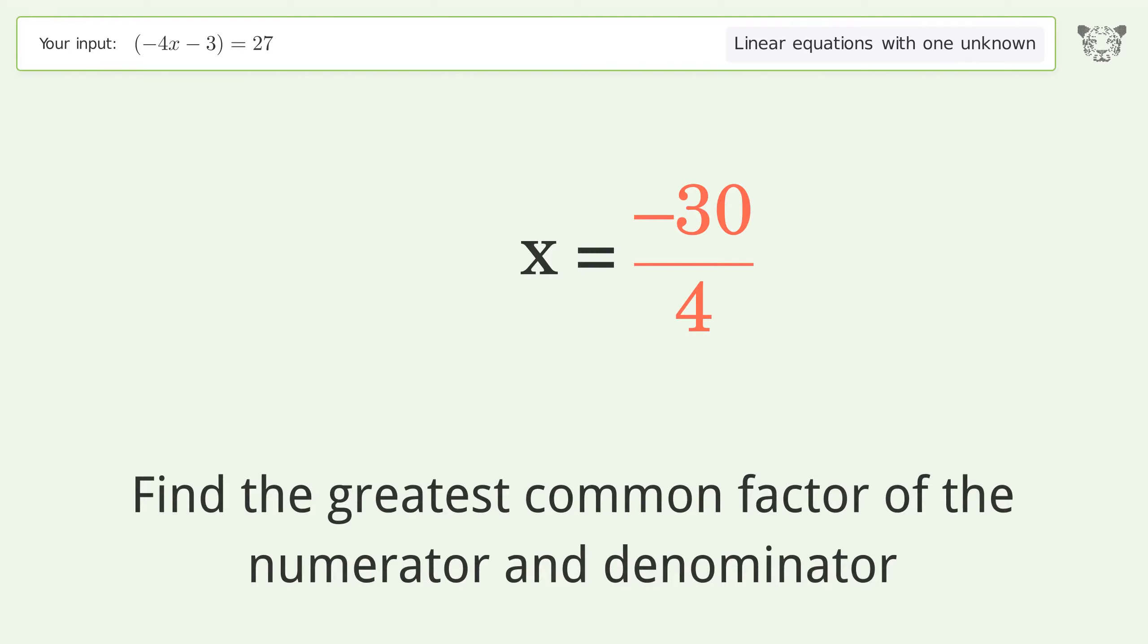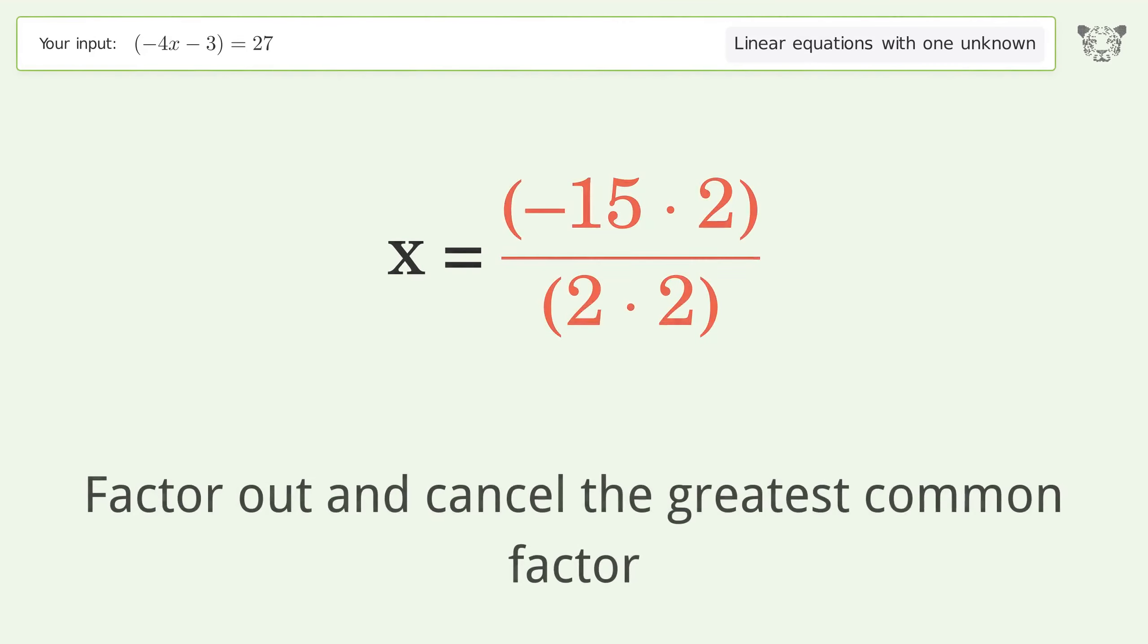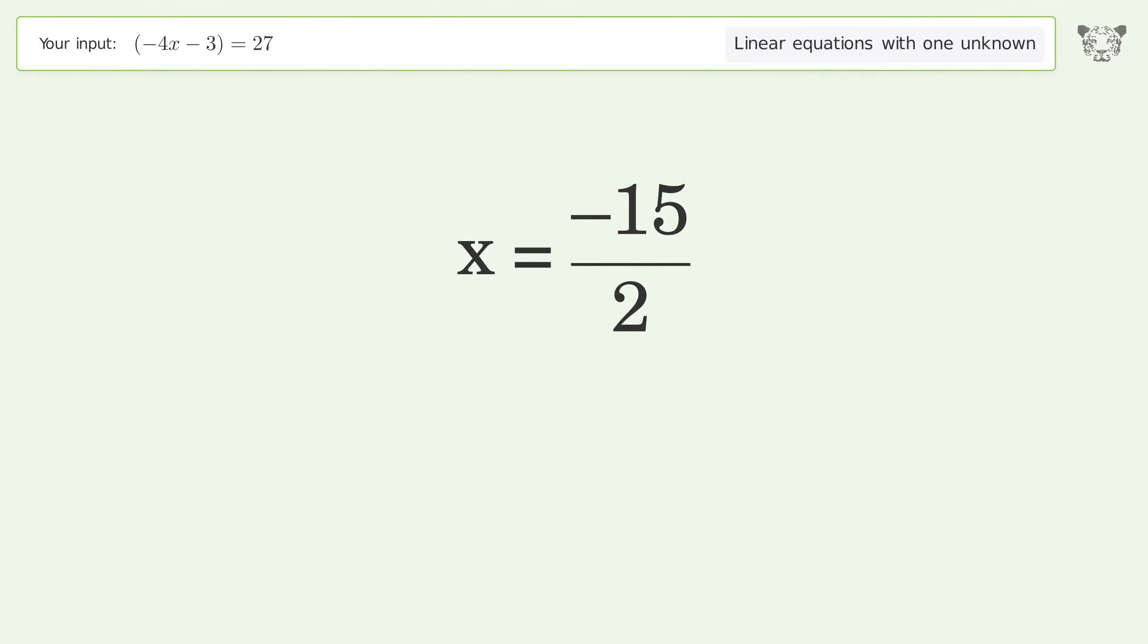Find the greatest common factor of the numerator and denominator. Factor out and cancel the greatest common factor. And so the final result is x equals negative 15 over 2.